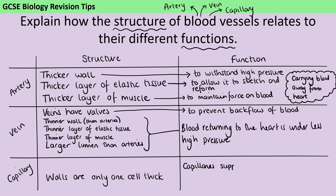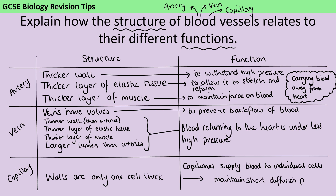Then there are the capillaries. The function of capillaries is to supply blood — and therefore oxygen and other nutrients — to individual cells. It's crucial that diffusion is able to happen out of those capillaries. So the reason that the walls are only one cell thick is to maintain a short diffusion pathway.